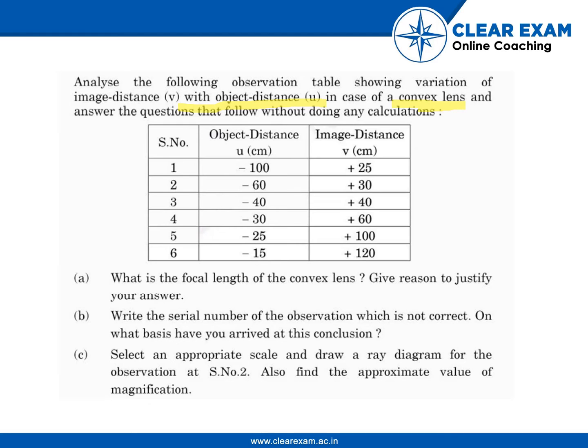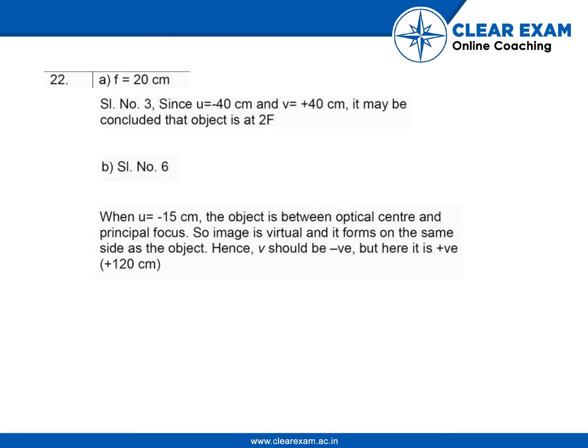First, the focal length of the convex lens is 20 centimeters. At serial number 3, since u is minus 40 and v is plus 40, it may be concluded that the object is at 2F.